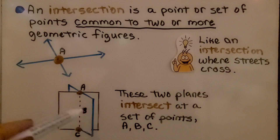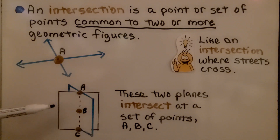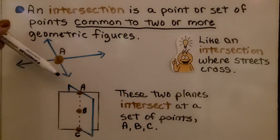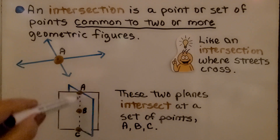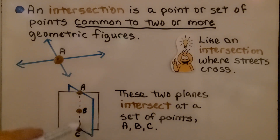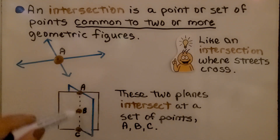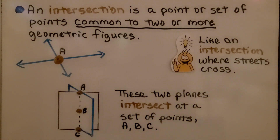These two planes intersect at a set of points A, B, C. It's like having a sheet of paper going this way and another one going that way, and there's a fold here — but we have points A, B, C. That's where they intersect at a set of points.